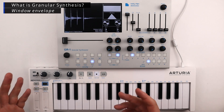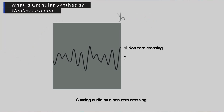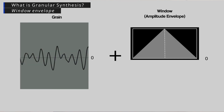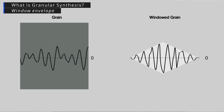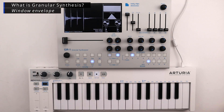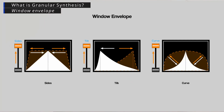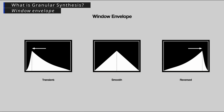When a sample is cut up into little grains it can cause pops and clicks if the audio is cut up at a non-zero crossing. To prevent these pops and clicks, grains are combined with an amplitude envelope to round off all the edges. This envelope is called the window envelope. The window envelope can be adjusted into different shapes which allow grains to sound sharp and transient, smooth and continuous, or give the illusion of a reversed sound.